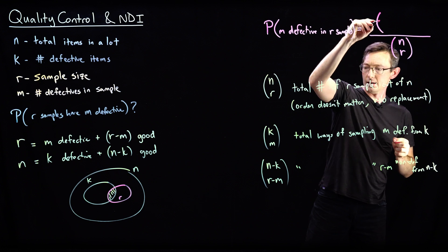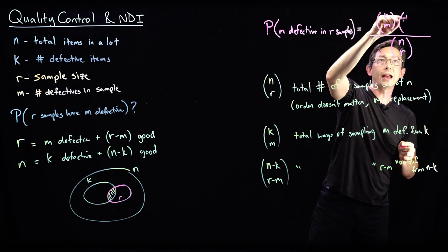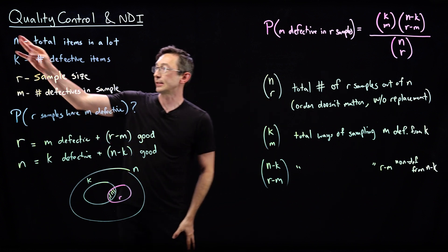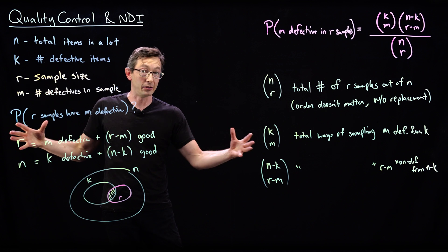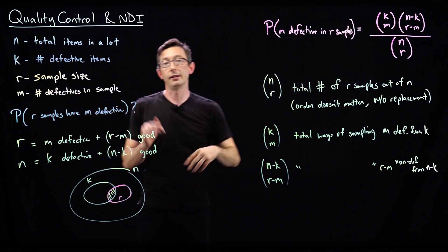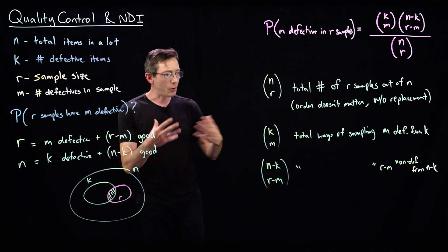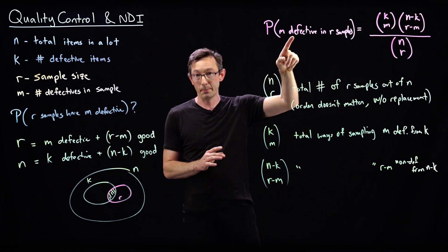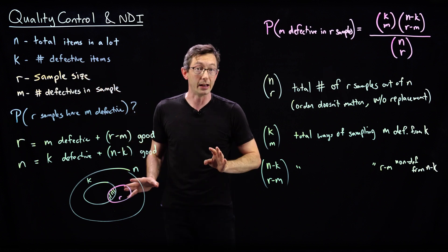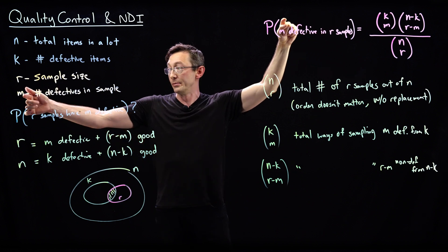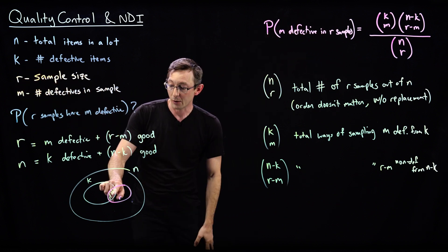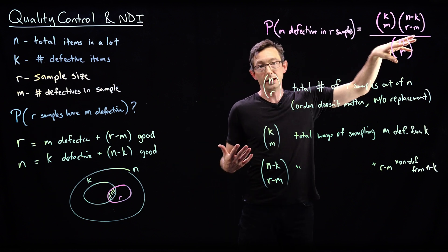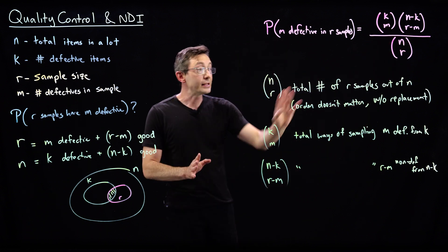The number of ways to get m defectives from k is k choose m, and the number of non-defective elements sampled is n minus k choose r minus m. So the full formula is: probability equals (k choose m) times (n minus k choose r minus m), all divided by (n choose r). This is the probability of getting m defective elements when sampling r items from a lot of n with k defectives.